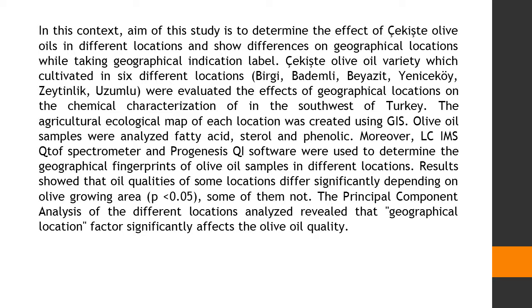The Secchiati olive oil variety, cultivated in six different locations — Bergeye, Bademley, Bayezet, Yeniskoy, Zatenlik, and Uzumlu — were evaluated for the effects of geographical locations on the chemical characterization of olive oils in the southwest of Turkey.